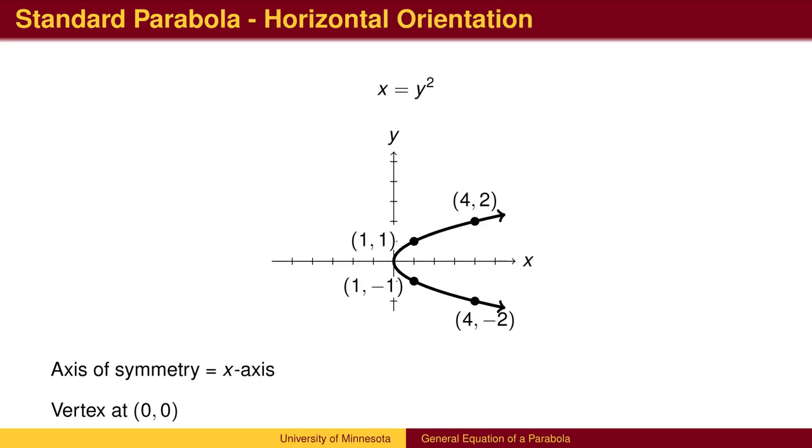If we change the roles of x and y, we get a parabola which is pointed to the right, symmetric across the x-axis. From the vertex, we can go up or down 1 and right 1. We can go up or down 2 and right 4. Here, we are thinking of y as the input and then squaring to get the x-value.